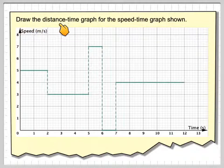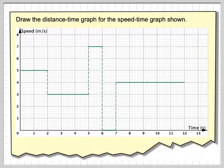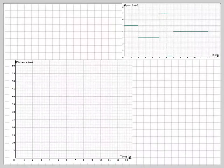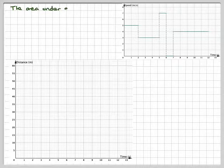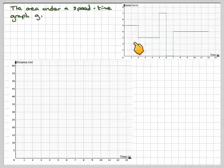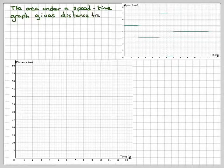In this question we're going to draw a distance-time graph for the speed-time graph shown. What we've got to realize is, if we've got a speed-time graph, the area underneath the graph will give distance travelled.